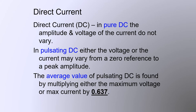In these instances our alternating current may be converted to a pulsating direct current where the current only flows in one direction and the polarity does not change, but the values for current and voltage may go from zero to a peak amplitude. We can find the average value of pulsating direct current by multiplying either the maximum voltage or max current by 0.637.